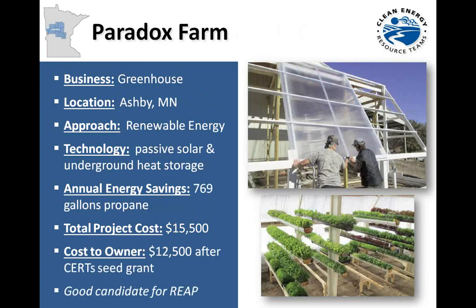Next is a project concept for REAP: Paradox Farm's Garden Goddess project, a passive solar technology with underground heat storage. It's a greenhouse business in Ashby, Minnesota. Annual energy savings were 769 gallons of propane. The total project cost was $15,500, and the cost to the owner was $12,500 after a SERSI grant — a great way to extend the growing season in cold Minnesota.